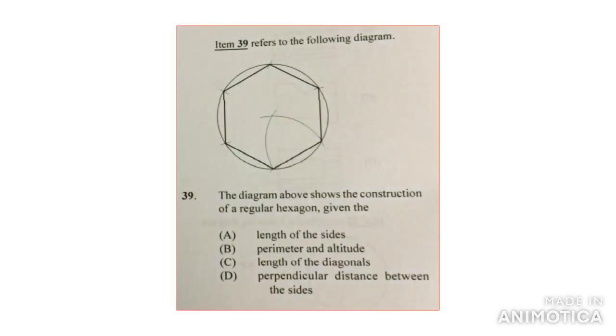The first one says the diagram above shows the construction of a regular hexagon given, and for that method, you will be given the sides. Once you are given the length of one side, you can use your compass to construct the rest of the hexagon. So the answer would be the length of sides, which is A.